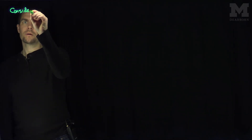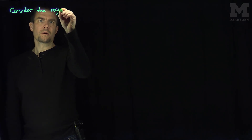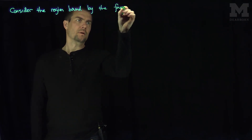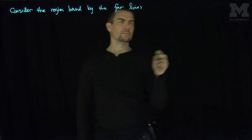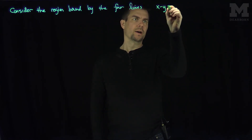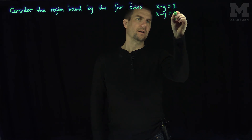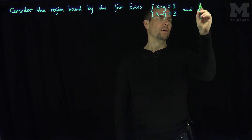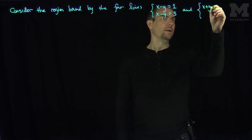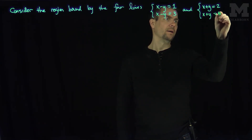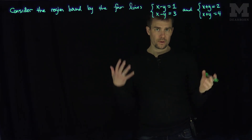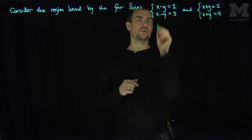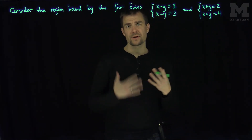Let's consider the region bounded by four lines. We'll look at x minus y equals one and x minus y equals three — that's the first pair of lines. The second pair will be x plus y equals two and x plus y equals four. The slope of the first two lines is the same, and the slope of the second two lines is the same, so this is actually going to be a parallelogram.